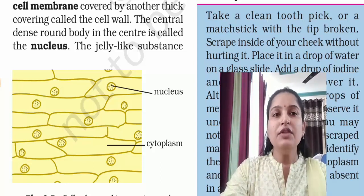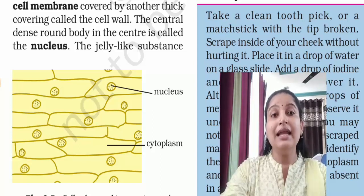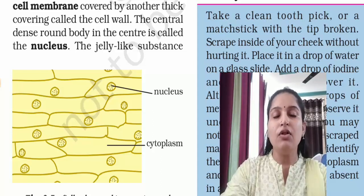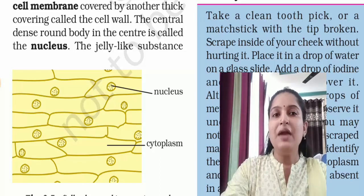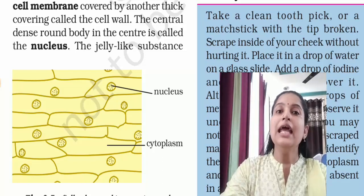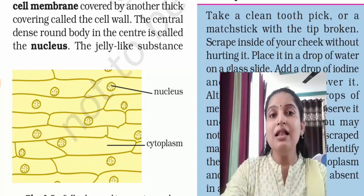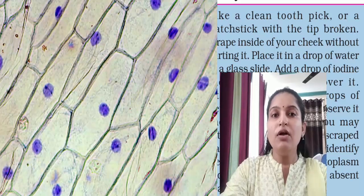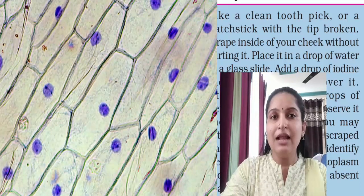The boundary of the onion cell is the cell membrane, covered by another thick covering called the cell wall. Because the onion is a plant, plants have an additional covering above the cell membrane called the cell wall. The cell wall is a feature of plant cells and is not present in animal cells.